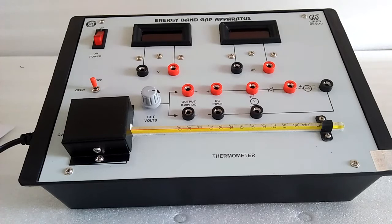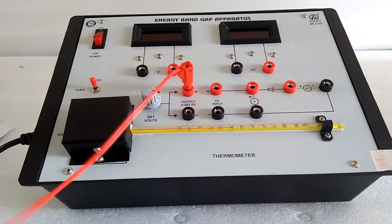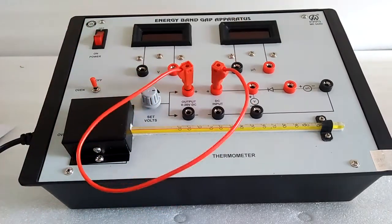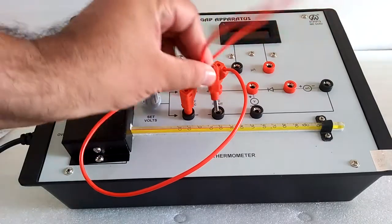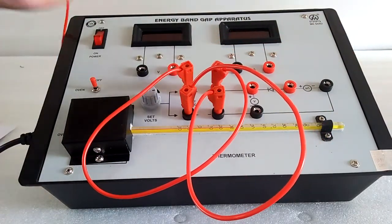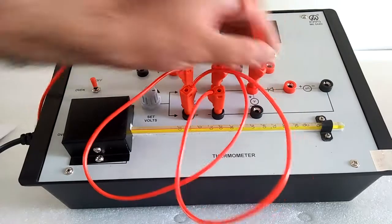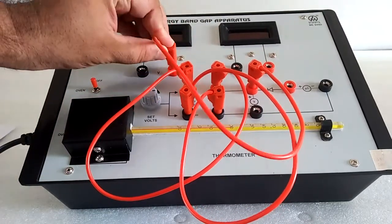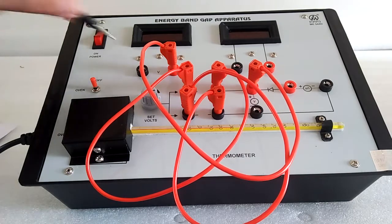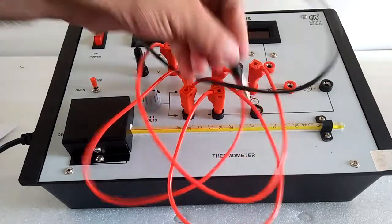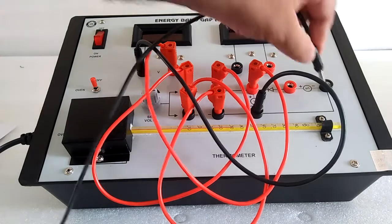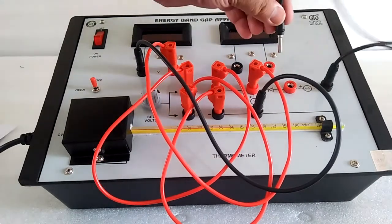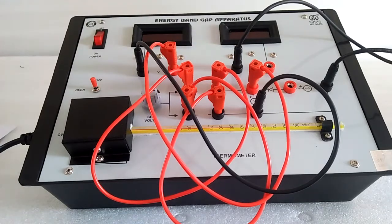Now, as per the manual follow the procedure and connect the output voltage to the circuit DC input. Connect the voltmeter in parallel, positive terminal to positive terminal and negative terminal to negative terminal. We have the current meter in series.